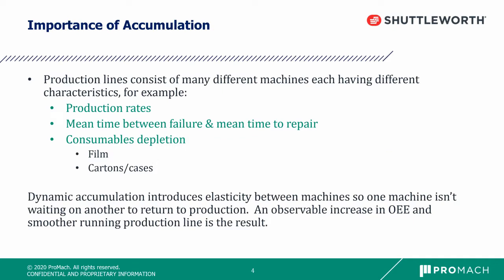As you know, production lines consist of different machines with different characteristics. They have different rates of production, downtime intervals, and consumable depletion. This data is important to understand so you can improve the efficiency of your production line. By introducing accumulation in the production line, you can decouple each of the processes so one machine is not waiting on another to return to production. In other words, if one machine goes offline, the entire line doesn't suffer. The result is an observable increase in overall equipment effectiveness.